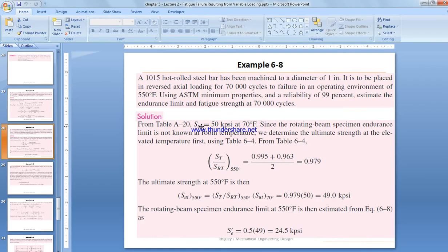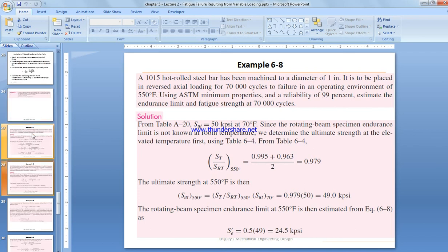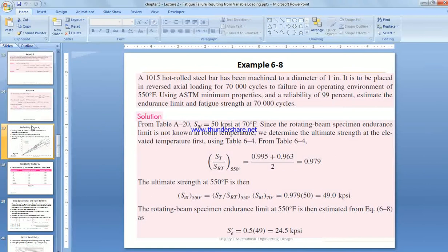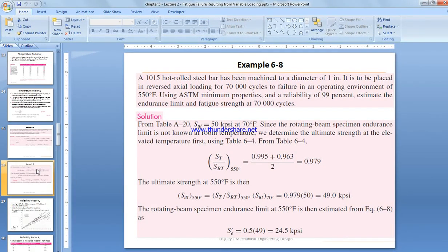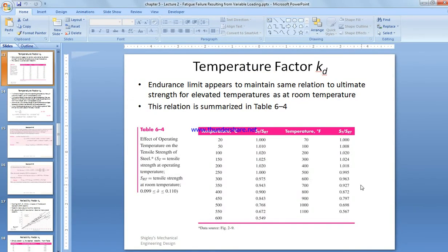We start with tensile strength SUT equal to 50 ksi at room temperature of 70 Fahrenheit. However, the temperature given in our case is 550, so we need to get the right temperature. We have to go back to the table to the Marin factor and find the one related to temperature equal to 550. So we need to find the interpolation to find the ratio of ST divided by SRT.